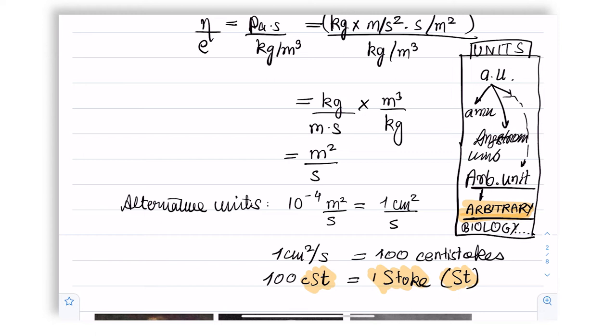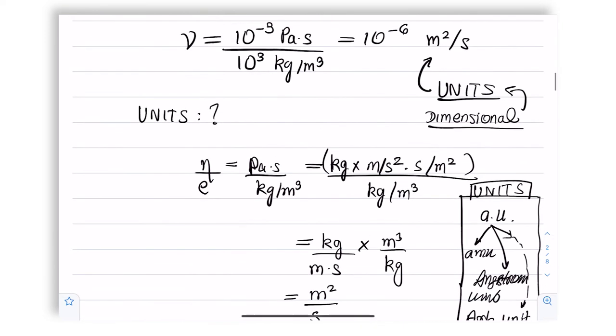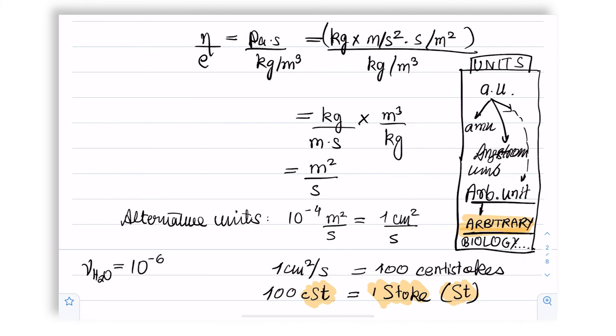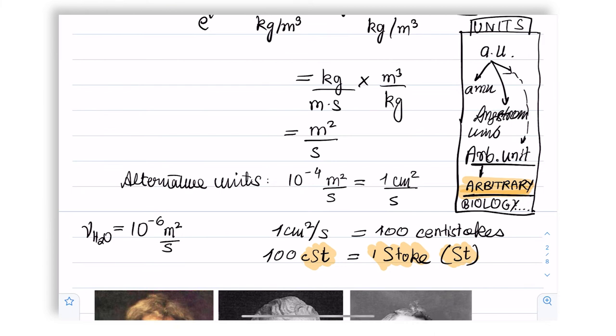These are specific units that are invented in some senses to deal with the small numbers that show up. Let us try a fun exercise. If nu H2O is equal to, in SI units, 10 to the power minus 6 meter squared per second, how much is it in centistokes and stokes? So you need to convert.